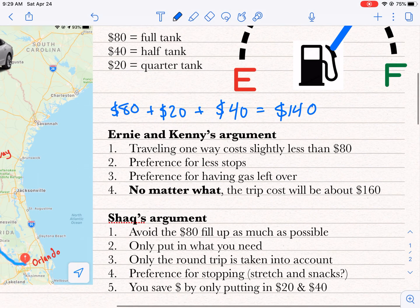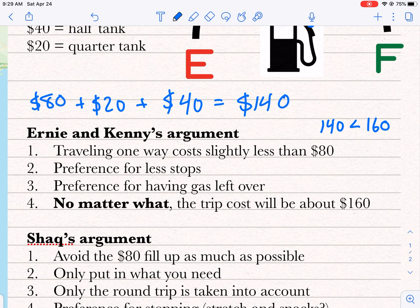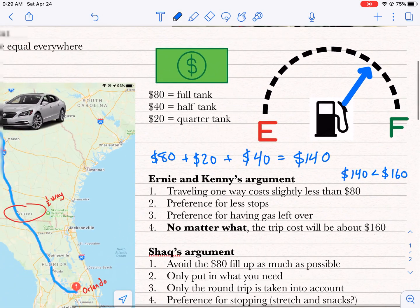Now, we know anybody knows that $140 is less than $160. Ernie Johnson and Kenny were arguing it's going to cost about $160. Shaq is saying it's going to cost about $140. So $140 is less than $160, but here's the problem.